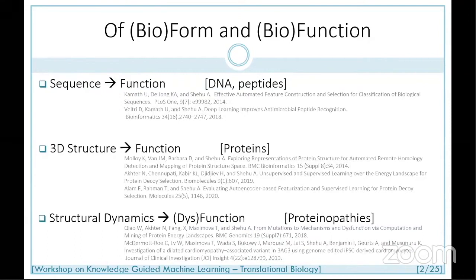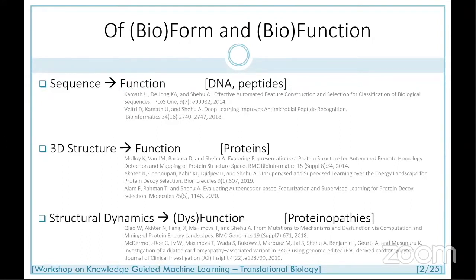I'll organize our journey through three threads. First, I'll give an example where you can infer function just from the building units without going to three dimensions. Then I'll show that for proteins this isn't enough and we need to represent structure. Finally, I'll add the complication of molecules that are inherently plastic and dynamic — switching between structures to perform biological activity — which we cannot ignore if we want to understand function or dysfunction in protein-related pathologies.